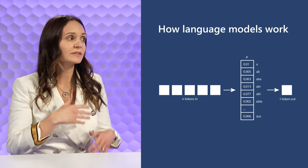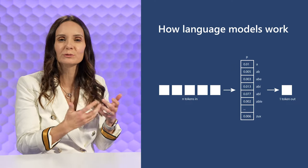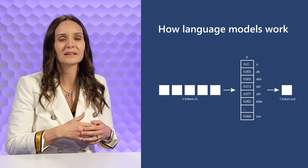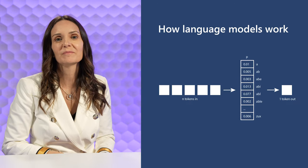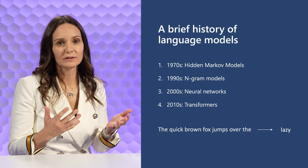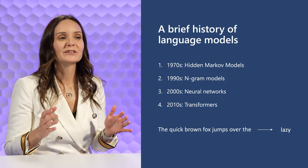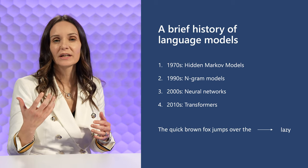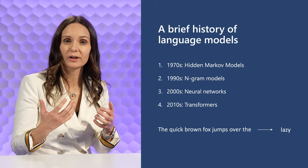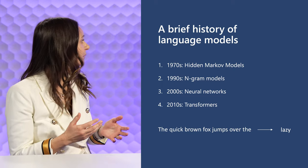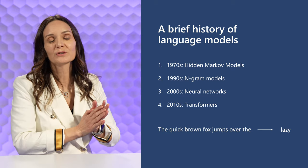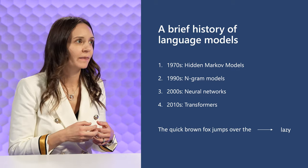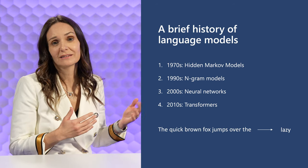This idea of N tokens in and one token out is really just a concept, not an algorithm — and it has been implemented in many different ways throughout history. In the 1970s we had Hidden Markov Models, or HMMs. The mathematical definition of a Markov process is that when generating a token it only looks at the token immediately before it. So if you input 'the quick brown fox jumps over the,' the HMM will only look at 'the' and might predict something like 'person' or 'shoe' — probably not 'lazy,' which is what you'd expect.